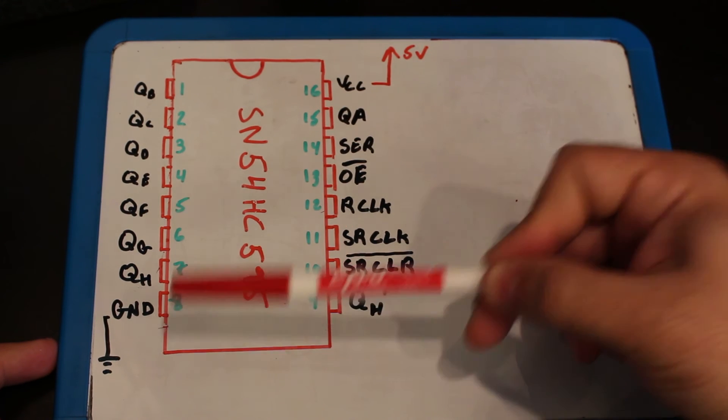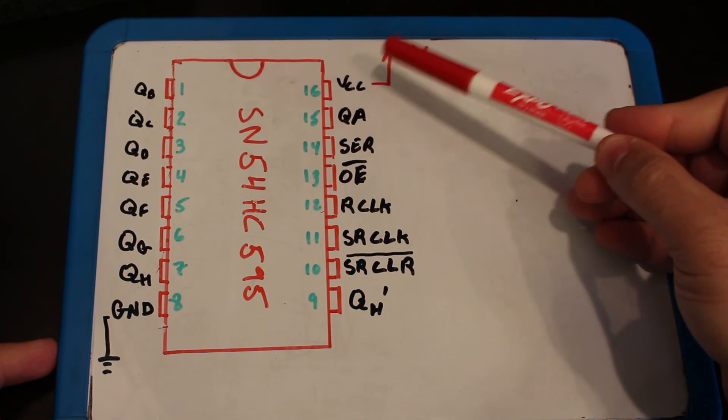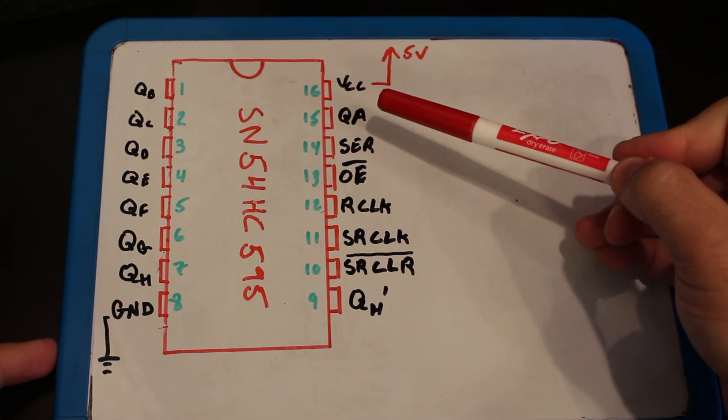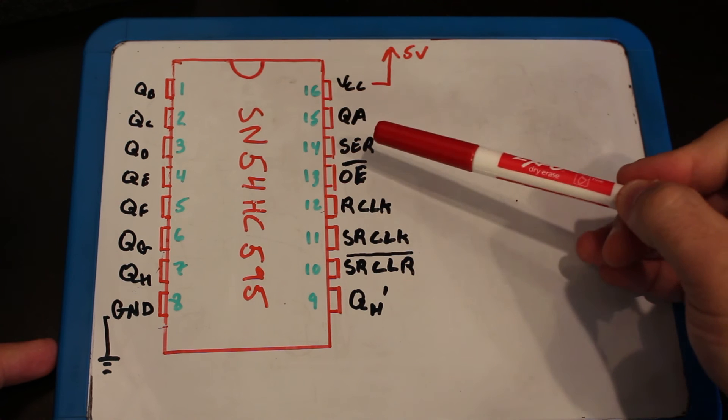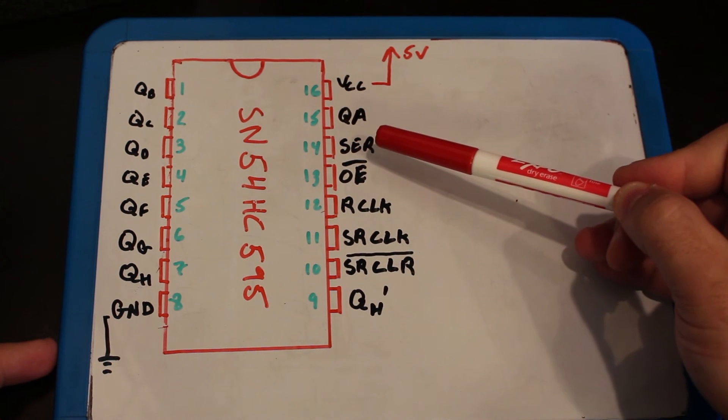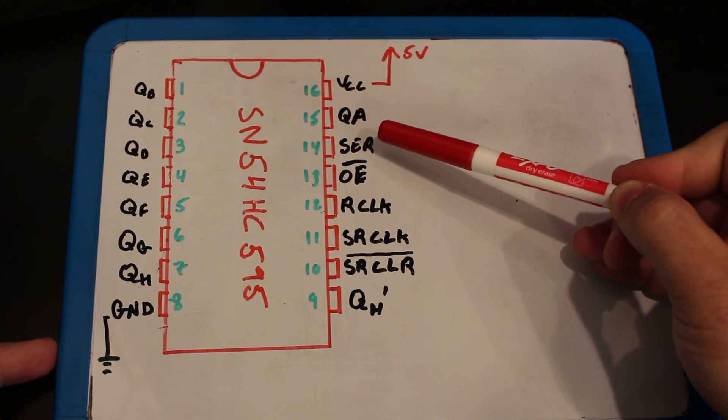Pin 8 is the ground, I'll go up over here to 16 which is the VCC, the 5 volt input. Pin 14 is our serial data indicating if you will have a high or low bit going in.